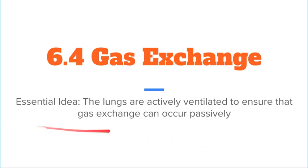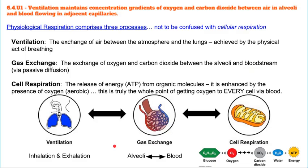The first thing we want to talk about is the idea that ventilation is occurring all the time. We've got three things occurring here: ventilation, gas exchange, and cell respiration. Ventilation is the process of bringing fresh air into the alveoli and removing the stale air. It maintains the concentration gradient of carbon dioxide and oxygen between the alveoli and the blood in the capillaries.